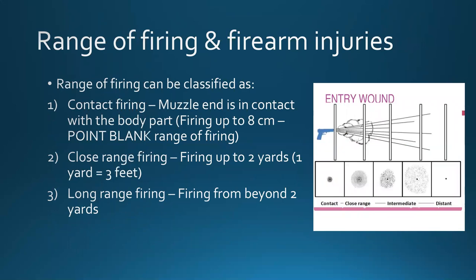According to range of firing, firearm injuries are classified as contact firing, close range firing, and long range firing. Contact firing means the muzzle end is in contact with the body part, or firing is up to eight centimeters; this is otherwise known as point blank range. Close range firing is up to two yards — approximately two meters or six feet. Beyond that is long range firing.